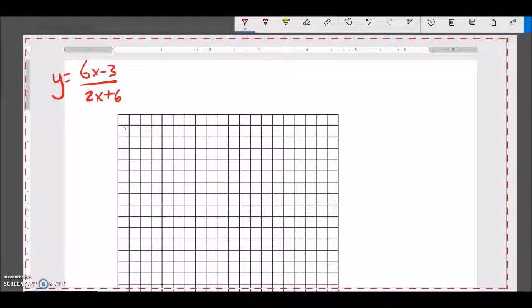We are going to sketch a graph of this equation right here, and this equation is going to have some asymptotes and some intercepts. We're going to find them all and then sketch it off of that.